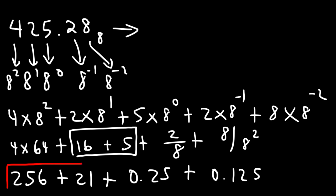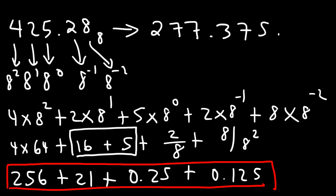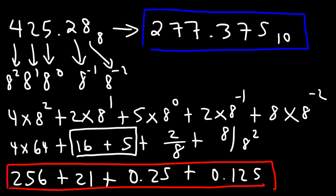Now let's add up the numbers. We have 256 plus 21 plus 0.25 plus 0.125, and so our answer is 277.375 in the base 10 system. And so now you know how to convert a fractional octal number into a decimal number. Thanks for watching.